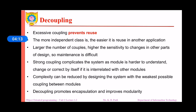Now let us see what is decoupling. The stronger the coupling among entities or objects, the more difficult it is to separate those objects or classes from each other. So there should be weak coupling or no coupling among objects or classes in the system. If there is weak coupling or decoupling among the classes, the classes can be separated from each other easily, and those classes or objects or methods can be useful for other applications.